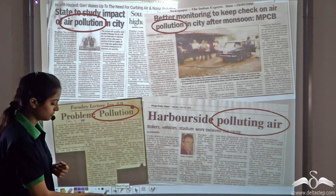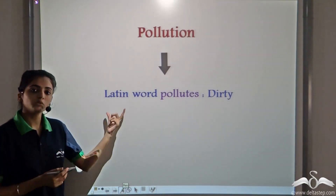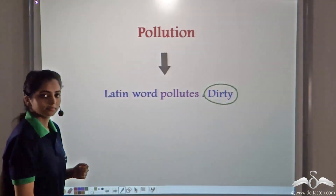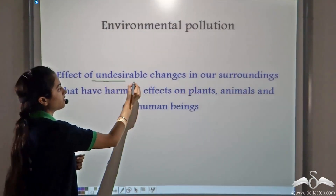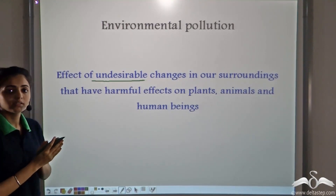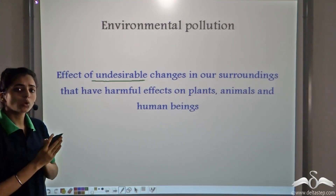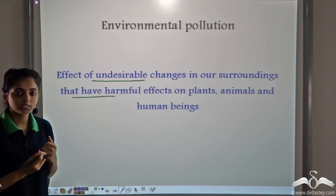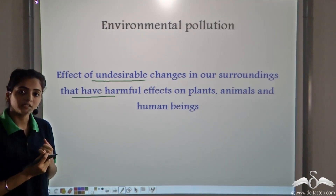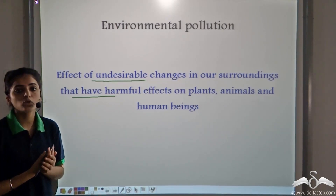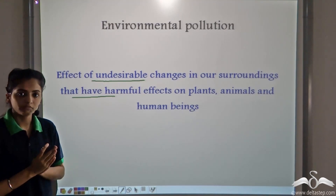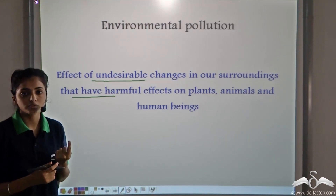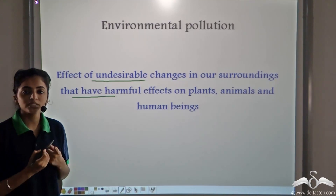Now what is pollution? Pollution comes from the Latin word 'pollutes' which means dirty. So whenever there is an effect of undesirable changes taking place in the environment — all the undesirable changes in the surroundings that have harmful effects on us, that is on human beings, plants and animals — such harmful effects on the surroundings we call environmental pollution. Environmental pollution is the effect of undesirable, harmful changes in our surroundings which affect plants, animals and human beings.